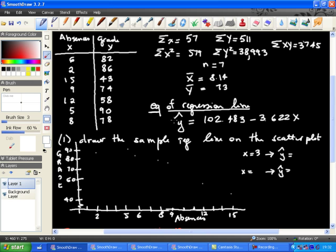So the y predicted is y hat equals 102.483 minus 3.622x. And so because the slope is negative, this is a negative correlation. Now there are generally a couple of questions that are asked to you. One of them is to simply draw the sample regression line on the scatter plot.